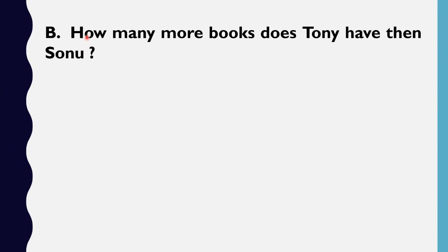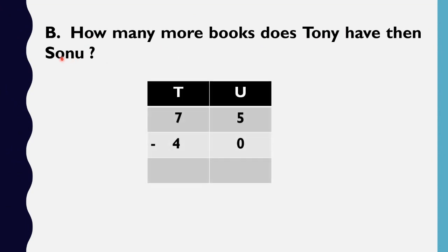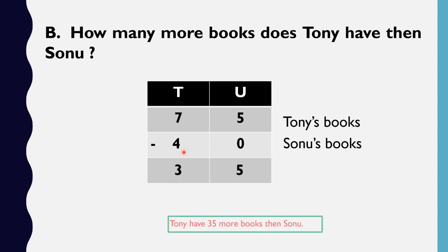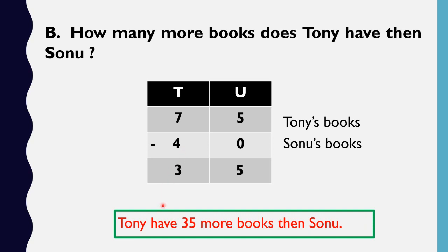The 2nd one: how many more books does Tony have than Sonu? Tony has 75 books and Sonu has 40 books. We do subtraction: 5 minus 0 is 5, and 7 minus 4 — what is the answer? 3. Very good. So Tony has 35 more books than Sonu.